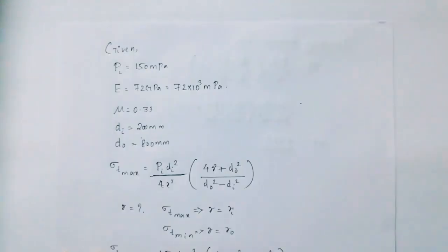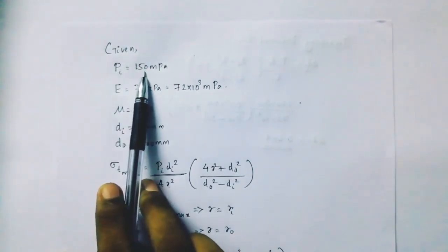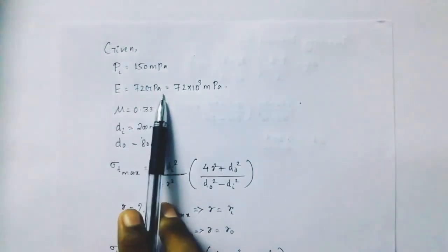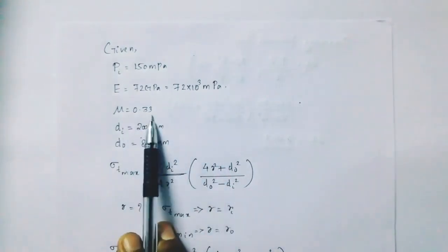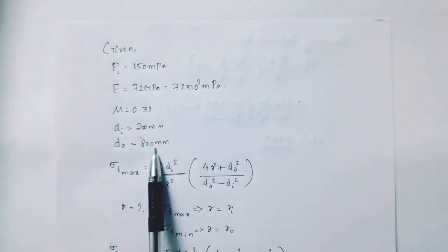Okay, now we have given data: Pi equal to 150 MPa, E is equal to 72 GPa, nu equal to 0.33, Di equal to 200, D note equal to 800 mm.